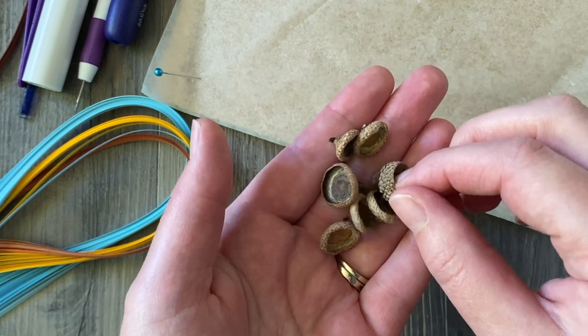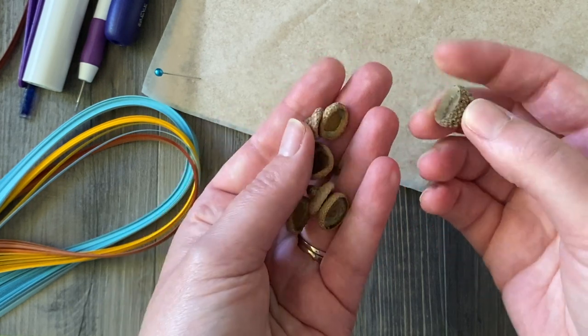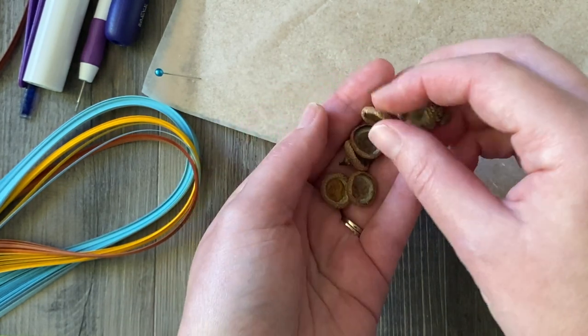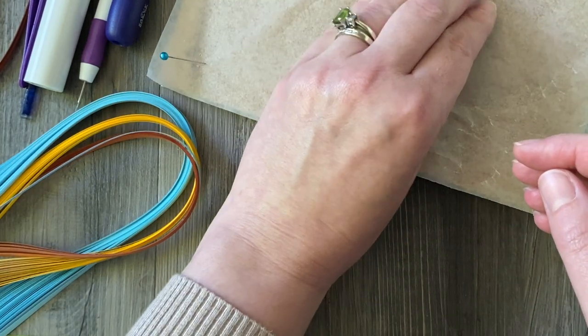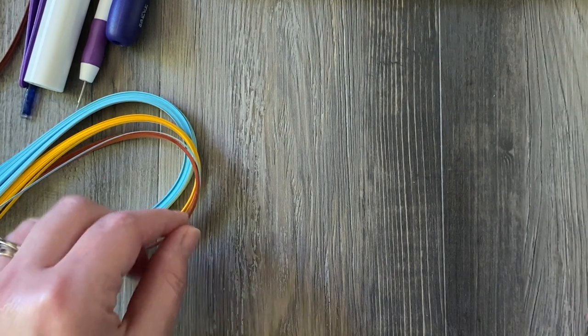The first one I'm going to be sharing is using these real acorn caps. I just collected these on a walk around my neighborhood and I cleaned them up real good with some water with a little bit of bleach in it and let them dry and then they are ready to go.